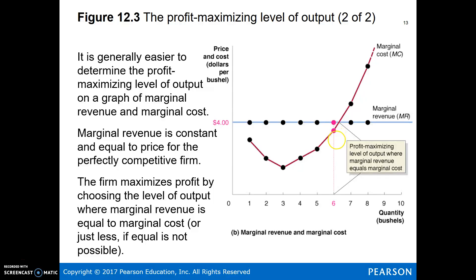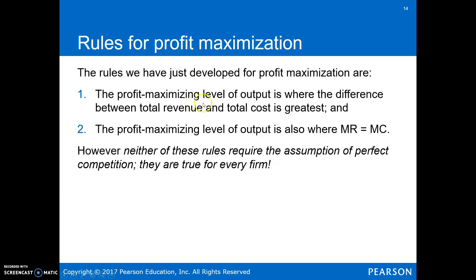The individual firm cannot affect the price, but it can choose its quantity. We're going to choose that quantity where marginal revenue equals marginal cost. If marginal cost becomes greater than marginal revenue, we're producing too much and need to back off production. This is going to be the same profit maximizing rule for every firm we look at. Where marginal revenue equals marginal cost — that is the profit maximizing rule.